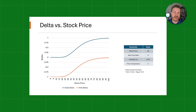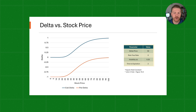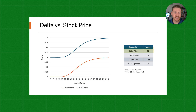Here we can see a chart that shows how Delta changes as stock price changes. We hold all inputs constant — including the strike price, risk-free rate, volatility, and time to expiration — and we just change the stock price. The strike price is 50. When the stock price is around zero, the call option is far out of the money and the Delta is zero, whereas the put option is far in the money and the Delta is near negative one.